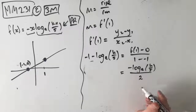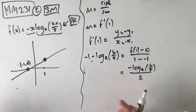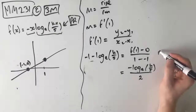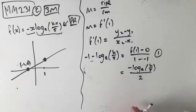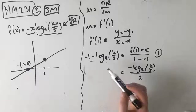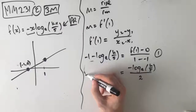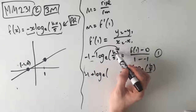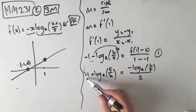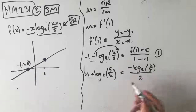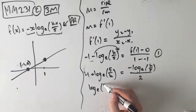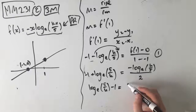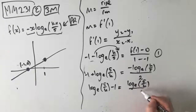Whenever we've got a log on both sides, we want to get log e of something equals log e of something. We'll make the log positive by taking the negative 1 and putting it to the power inside, which flips the fraction. So negative 1 plus log e of 5 on k rearranges to log e of 5 on k minus 1. And we do the same on the other side to get log e of 5 over k, all over 2.